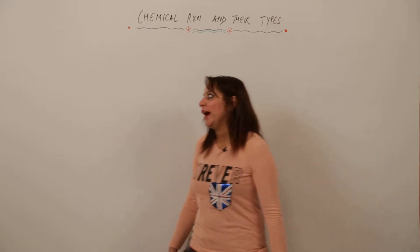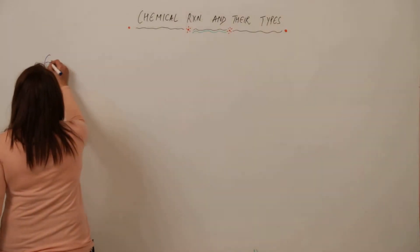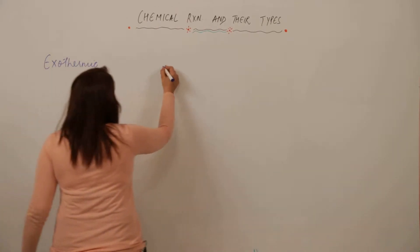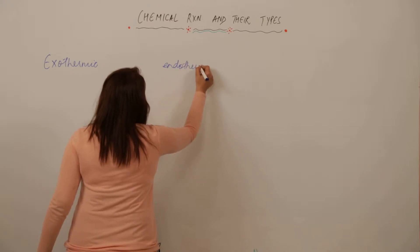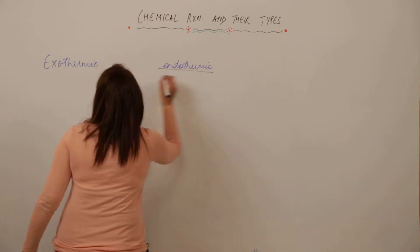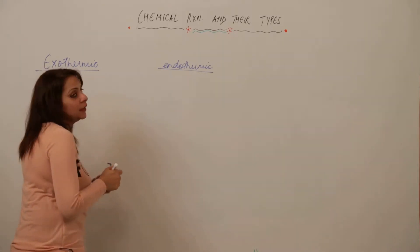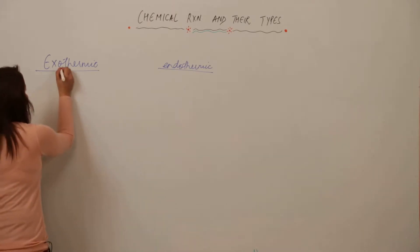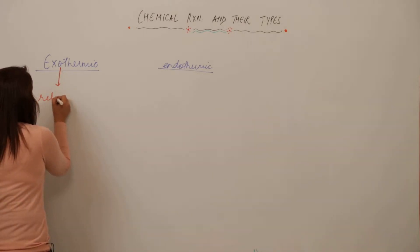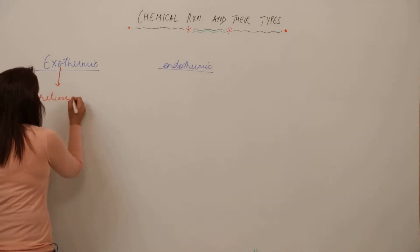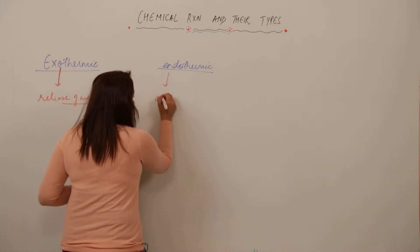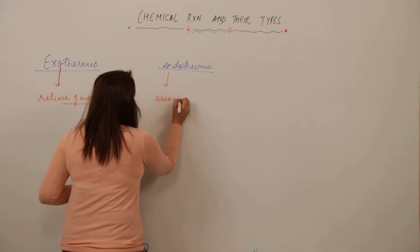The next type of reaction we are taking up is based on energy changes, that is the exothermic and the endothermic reaction. As the name suggests, 'exo' means external and 'thermic' means heat changes. Whichever reaction leads to the release of energy comes under the category of exothermic reaction, and any reaction accompanied by the absorption of energy is called endothermic reaction.